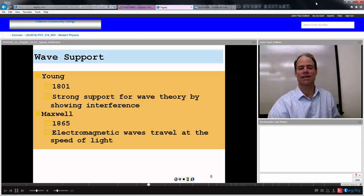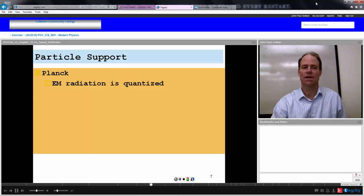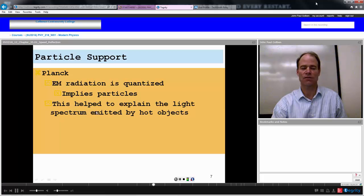Maxwell, 1865, electromagnetic waves travel at the speed of light and he showed it theoretically. Very good. Particle support, Max Planck showed that electromagnetic radiation is quantized. This implies bundles of energy called photons and particles. Actually didn't call it photons then. This helped explain the light spectrum emitted by hot objects.